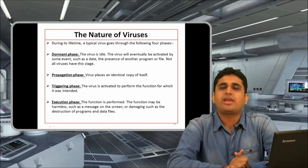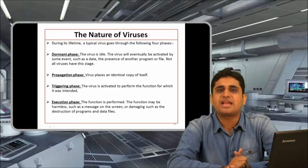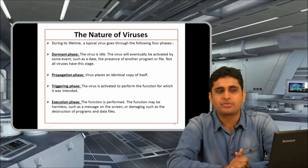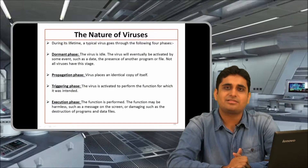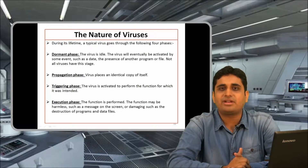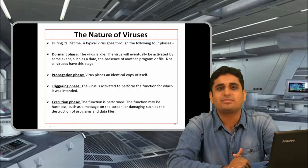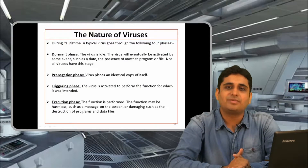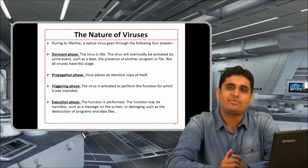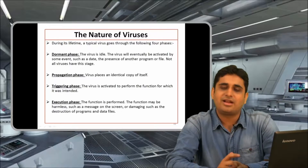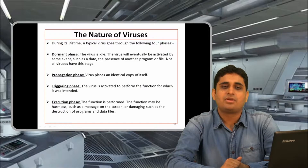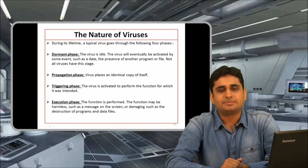In the propagation phase, a virus tries to create an identical copy of itself in the machine. One copy of the virus remains safe so it will not get affected if caught by an antivirus program. To keep the virus safe, it creates an identical copy, and that copy runs and starts affecting the system.